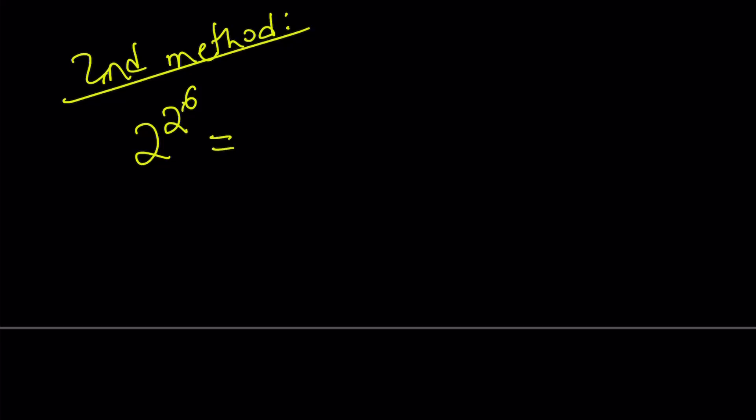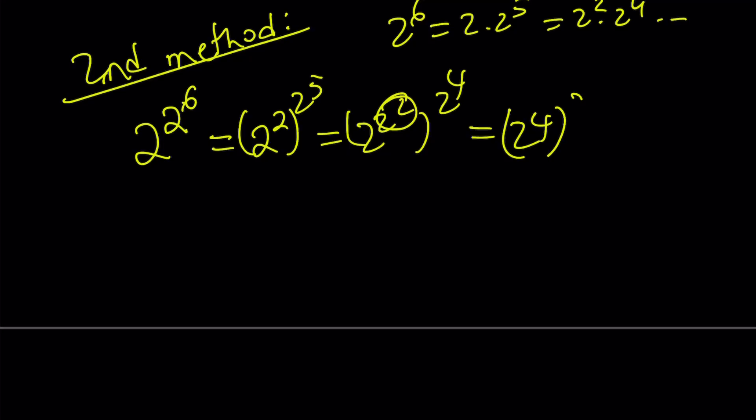For example, I can take out one of the 2s here and kind of split up, like 2^6 can be written as 2·2^5, 2^2·2^4, and so on. So I can do the following: 2^(2^2) raised to the 2^4. Now notice that here I get 2^4 and 2^4, and this shows us that a is 16. Awesome. And then b is obviously easier. You already know about that.